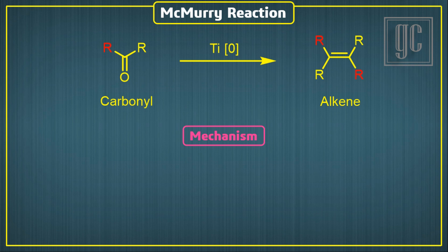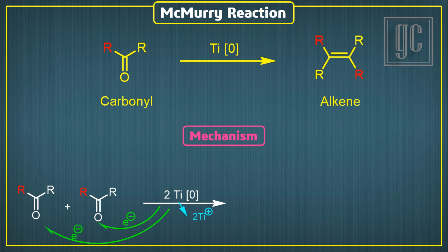Now we are going to discuss the mechanism of this rearrangement. Titanium metal, in the oxidizing process, transfers one electron to the oxygen of carbonyl, and because of that, one electron from the bonding electrons moves to the carbon atom. As a result, an anion forms on the oxygen atom.